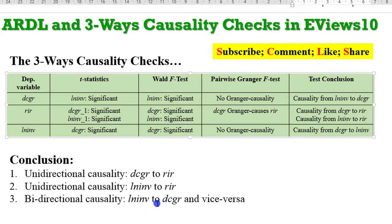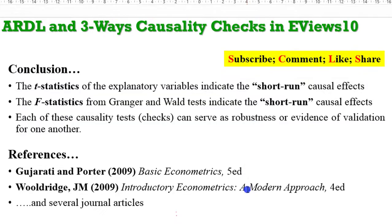Like I said, the element of causality will always enrich every study. It brings out other salient information regarding the variables that you have used in your research. So try to include causality checks or causality tests in your manuscripts and papers. The T-statistics and the F-statistics, either from the explanatory variables or from Granger and Wald tests, will always serve as robustness or evidence of validation of any causal relationship in your model. For further referencing, you can consult the textbooks shown on screen, as well as journal articles that use causality checks in their papers.